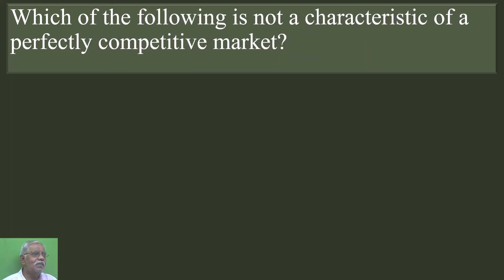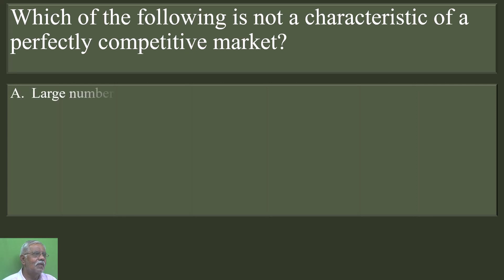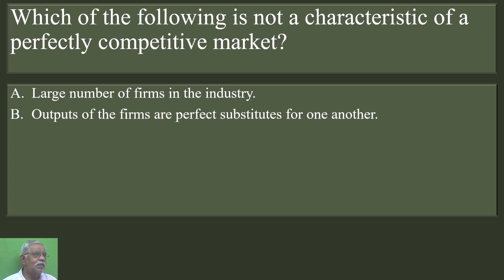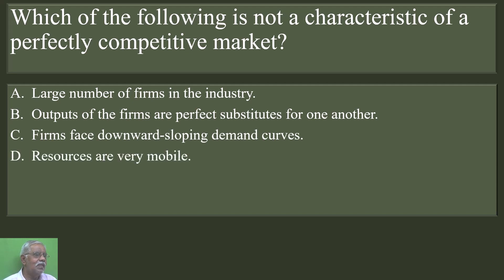Which of the following is not a characteristic of a perfectly competitive market? Options: large number of firms in the industry; outputs of the firms are perfect substitutes for one another; firms face downward sloping demand curve; resources are very mobile. Option C is the correct answer. Firms facing a downward sloping demand curve is wrong — it is not a characteristic of a perfectly competitive market. Firms have a perfectly elastic demand curve, which is parallel to the X axis.